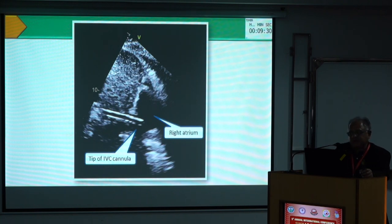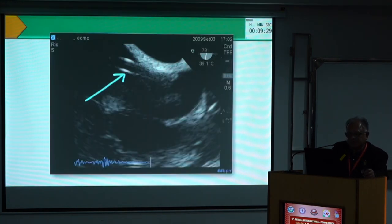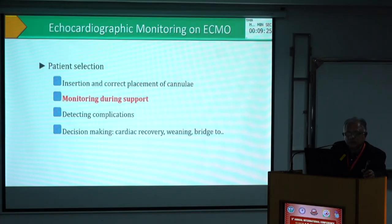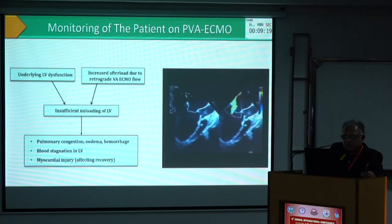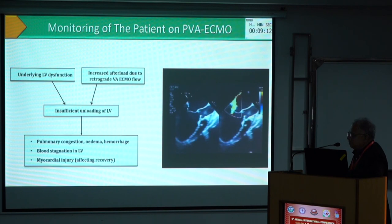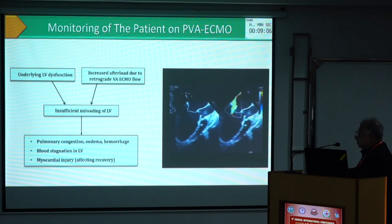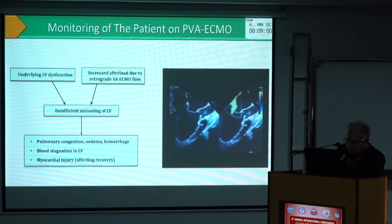You can see the IVC cannula going into the right atrium on different views. During support, how do you monitor the patient with serial echo? You can see the left ventricular end-diastolic volume. The contractility is not very good, and there is a mitral vegetation also. The left ventricle is not adequately unloaded in this situation. If unloading is insufficient, you can get pulmonary congestion, and myocardial contractility can still get worse.